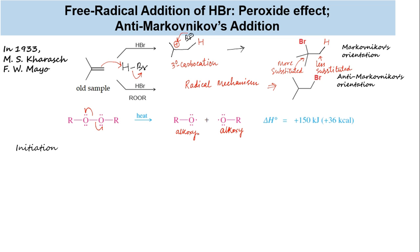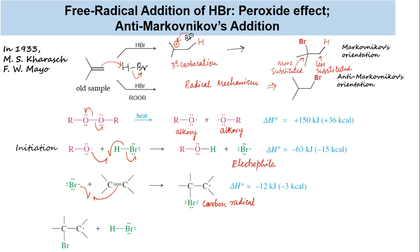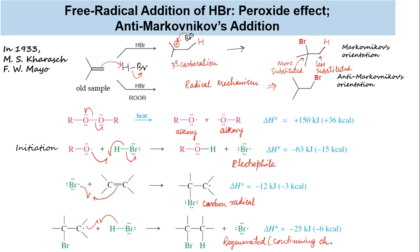Let's consider the individual steps. In the initiation step, free radicals generated from the peroxide react with HBr to form bromine radicals. The bromine radical lacks an octet of electrons in its valence shell, making it electron-deficient and electrophilic. It adds to a double bond, forming a new free radical with the odd electron on a carbon atom, generating a carbon radical. This free carbon radical then reacts with an HBr molecule to form a bond and generate another bromine radical. The regenerated bromine radical reacts with another molecule of the alkene, continuing the chain reaction. These are called chain propagation steps.